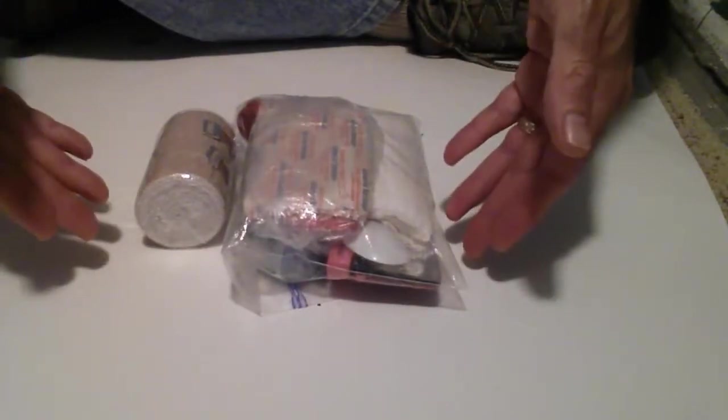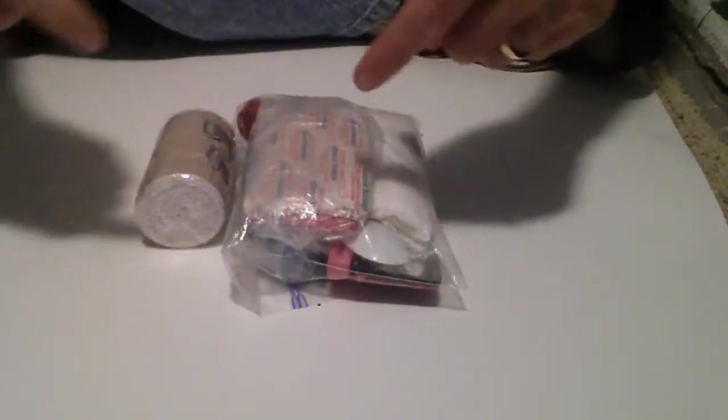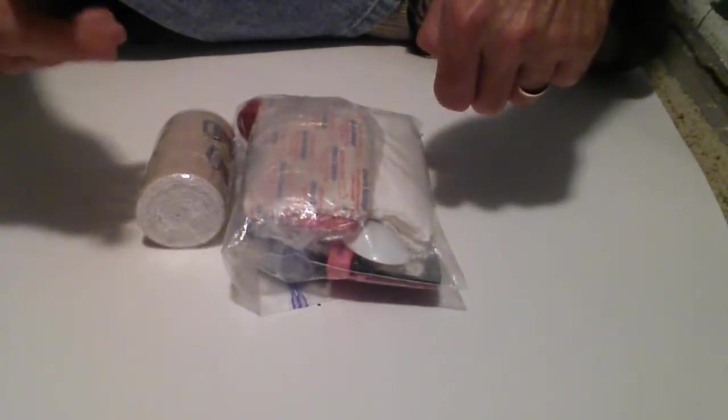This is my What Might Happen kit or my Murphy kit. And these items go in either the bottom of my pack or generally they go in the hydration sleeve that is always empty except for these items.